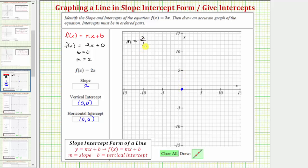From this point here, because the slope is two over one, the numerator of two tells us to go up two units, and the denominator of one tells us to go right one unit. So if we go up two units and right one unit, another point on the line must be this point here.